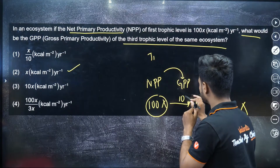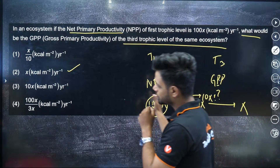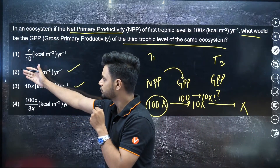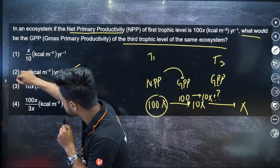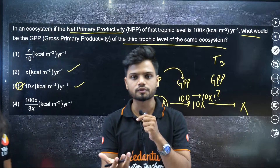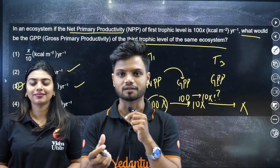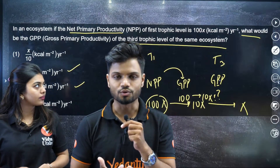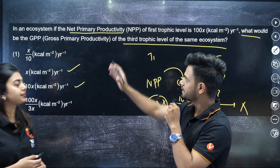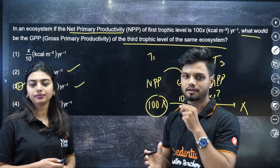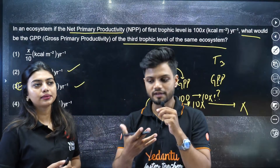There is also a second possibility: if 100x is considered the NPP, then the GPP would be 1000x, making the next level's GPP 100x, and applying the 10% law gives 10x. So there are two possibilities — option two and option three. But the NCERT-based answer key is showing option three as the answer. It's controversial because of the grammatical error. I would recommend all of you challenge this question — there is very high probability it can be given as a bonus mark.